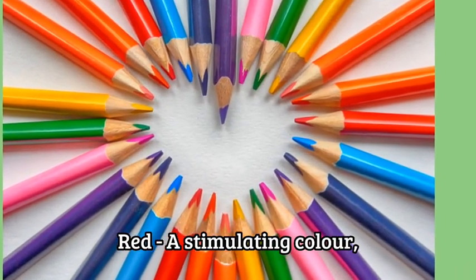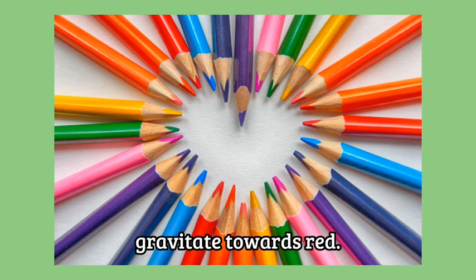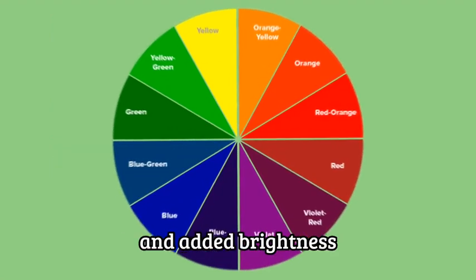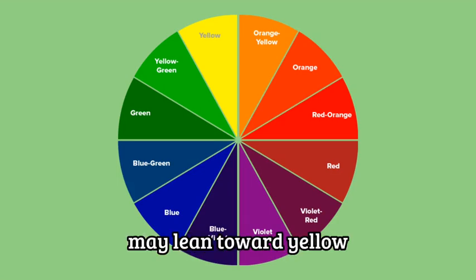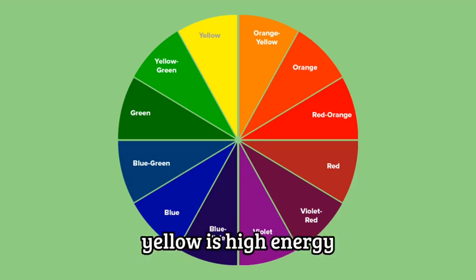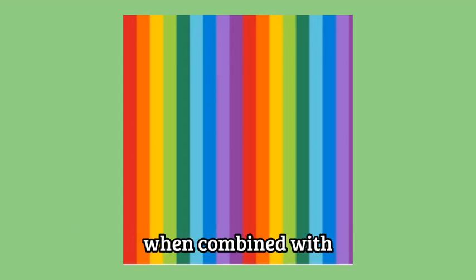Red is a stimulating color, never to be overused, but used right it can really deliver. Impulsive personalities gravitate towards red. Yellow increases mental stimulation and adds brightness in rooms with limited or no windows. Extroverted, high-energy individuals may lean toward yellow and red accents. Yellow is high-energy and cheerfully uplifting. Orange is said to influence appetite, making it a popular choice for dining rooms and appealing to the non-conformists among us. Green has a calming effect on nerves, even said to lower blood pressure, and can create really dramatic effects when combined with other colors.